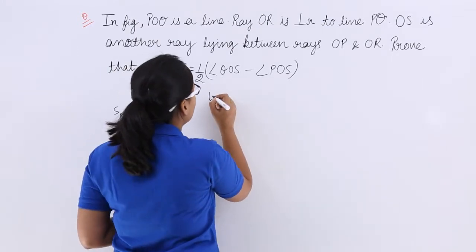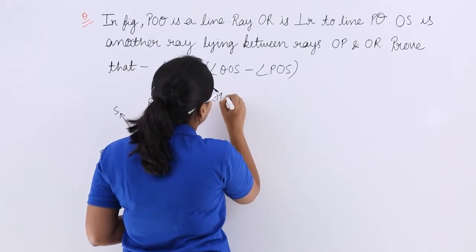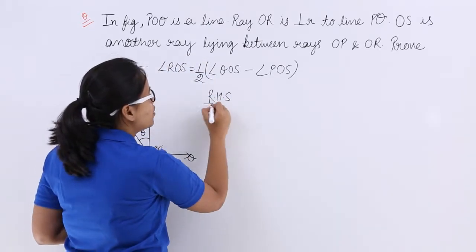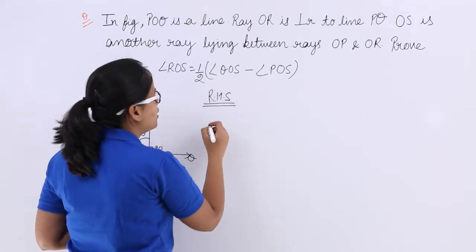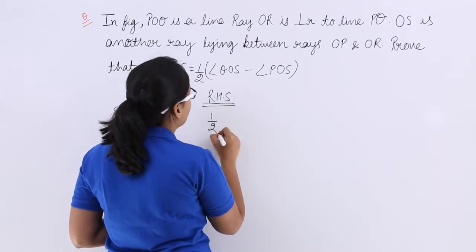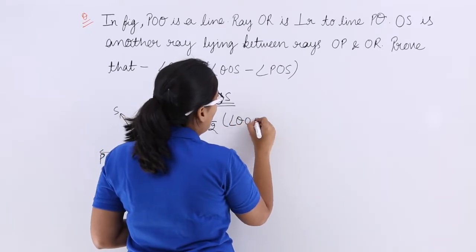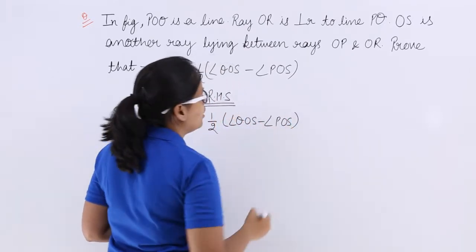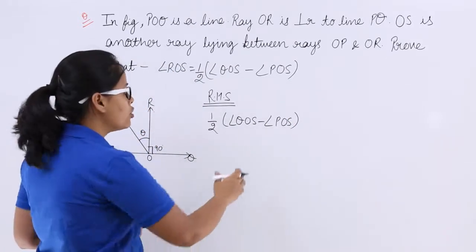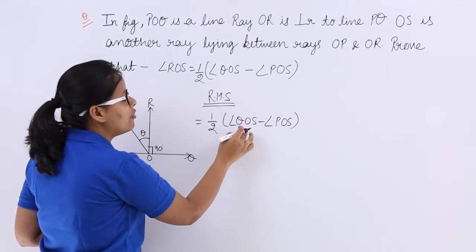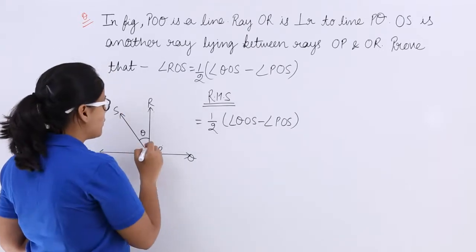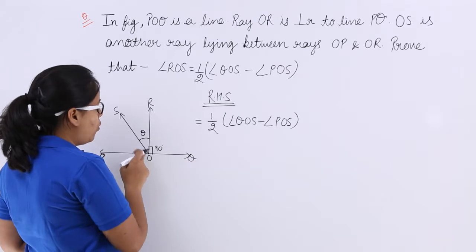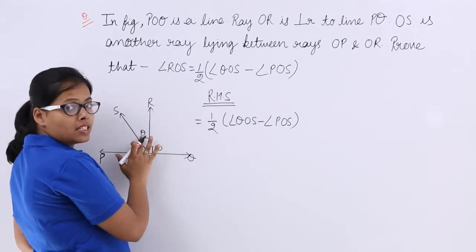Let's take right-hand side. Our right-hand side is half of angle QOS minus angle POS. Now you need to find out the value for QOS. As this angle is 90 degree, you can see here, angle QOS, what will be the value for this? 90 degree plus theta.